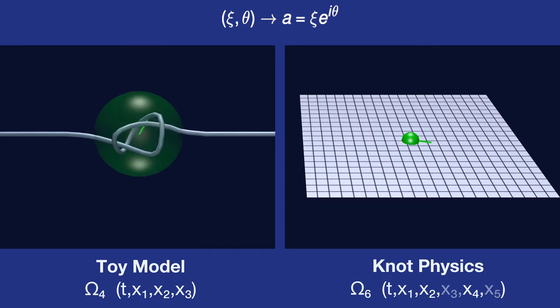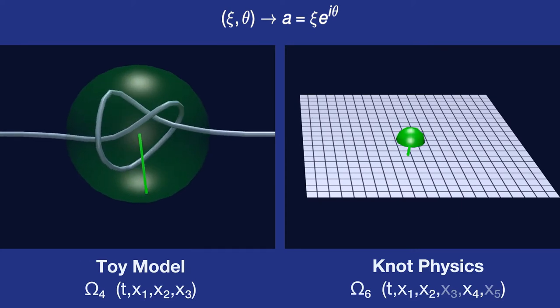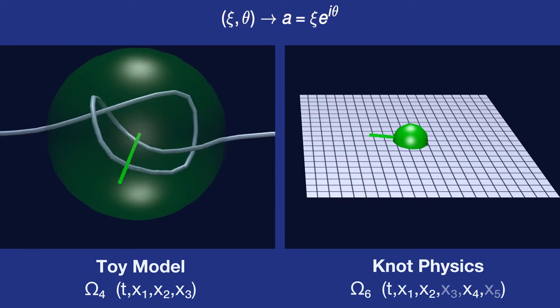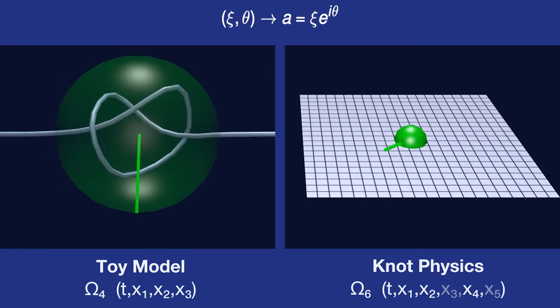On the right side, we see the comparable situation in knot physics. We have a knot in the spacetime manifold, and that knot is changing in size as it is rotating.